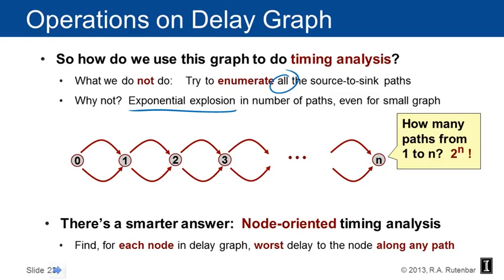The smarter answer is called node-oriented timing analysis. What's interesting about it is that for each node in the delay graph we find the worst node along any path, and label the node with important information in a very efficient way — just a couple of walks through the graph. Once we know that information on each node, we can do all the analysis we need.